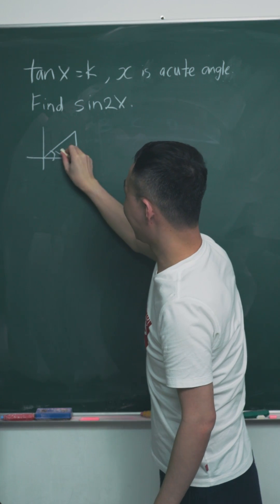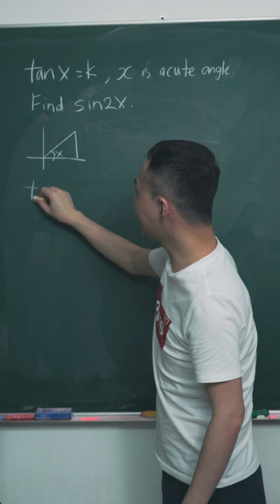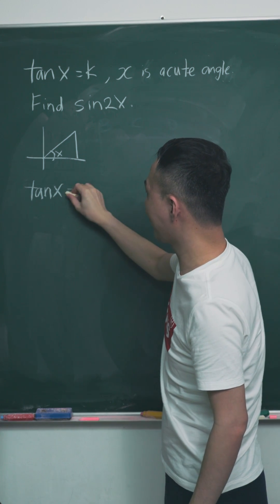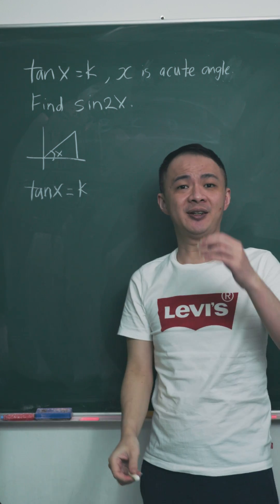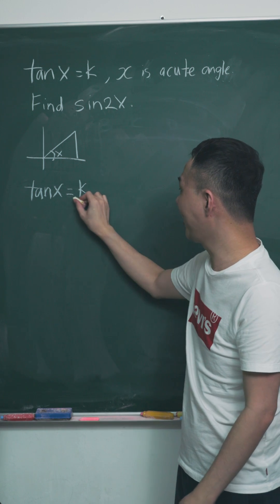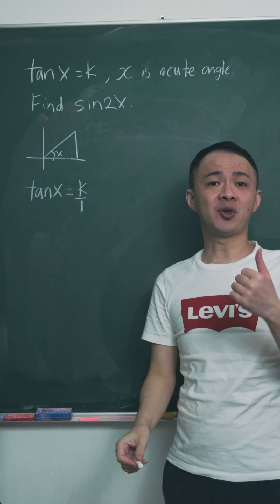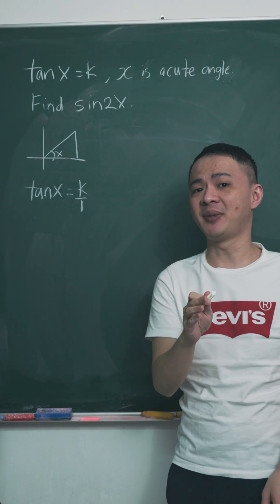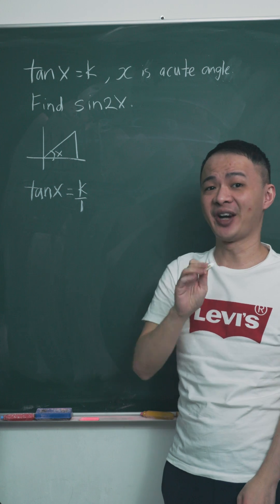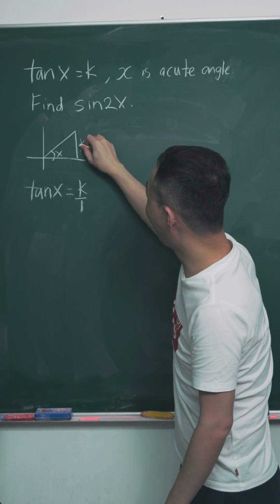And then I label this one as x. Since the question tells me tangent x equals k, what I want to do here is I will add a 1 for it. It's k over 1. From SOHCAHTOA, I know tangent is basically opposite over adjacent. So it will be k over 1.